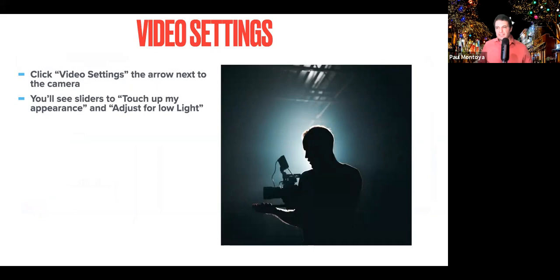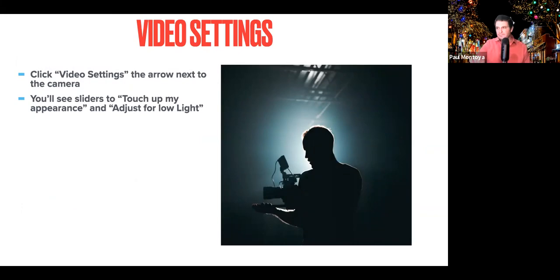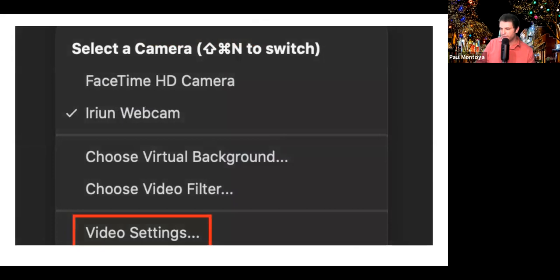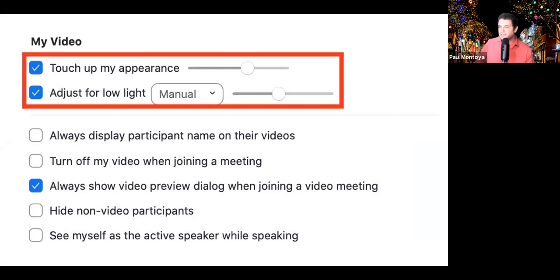The next thing is video settings. You're going to click the same arrow next to the camera, and you'll see two sliders. One is for Touch Up My Appearance — good for if you just wake up and have to attend a Zoom meeting looking rough; it does a little bit of Photoshop so you don't look quite as rough. Then there's another one for Adjust for Low Light — if you don't have a professional lighting setup, you can actually bring more light into your image with this filter on Zoom.